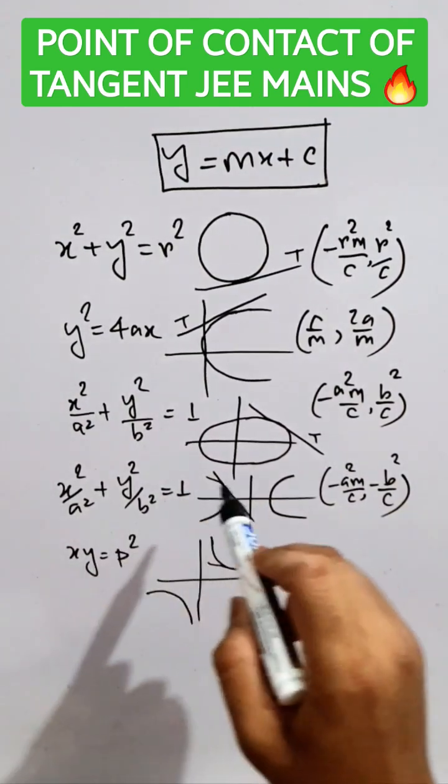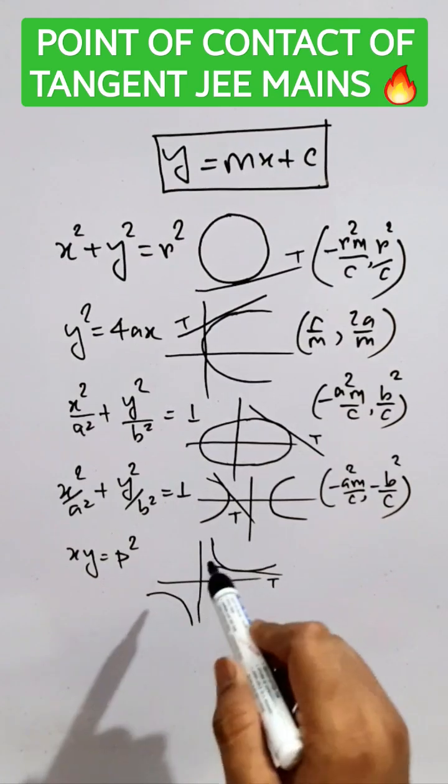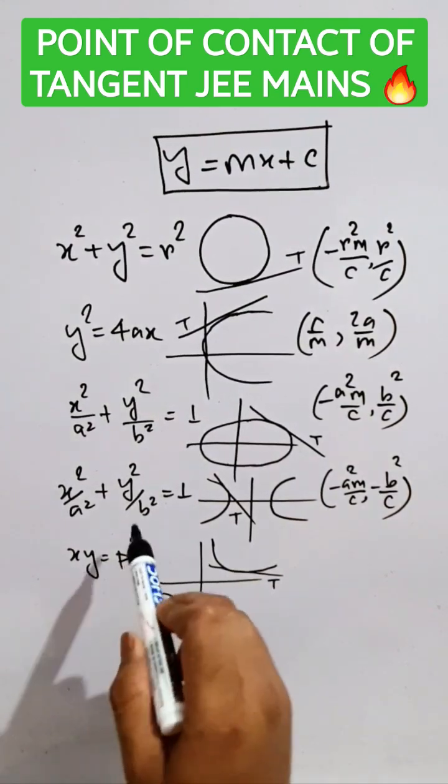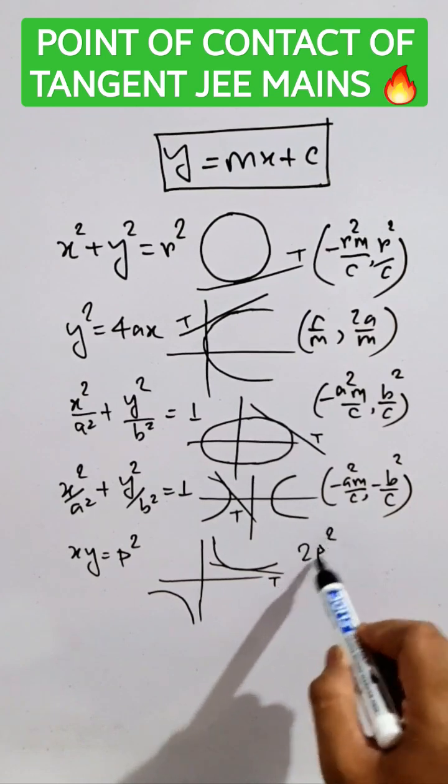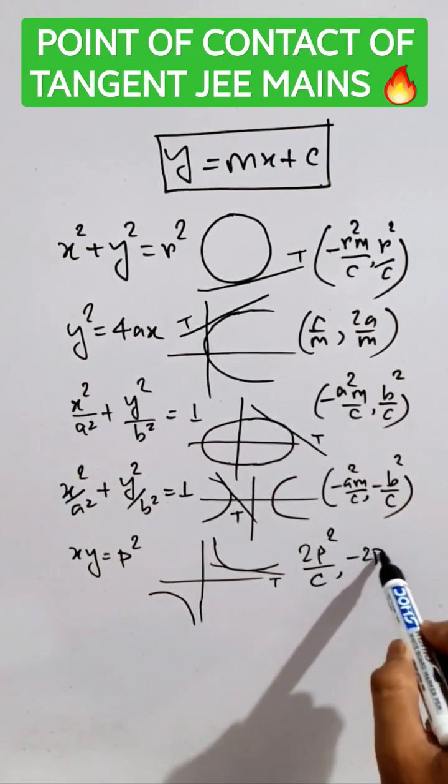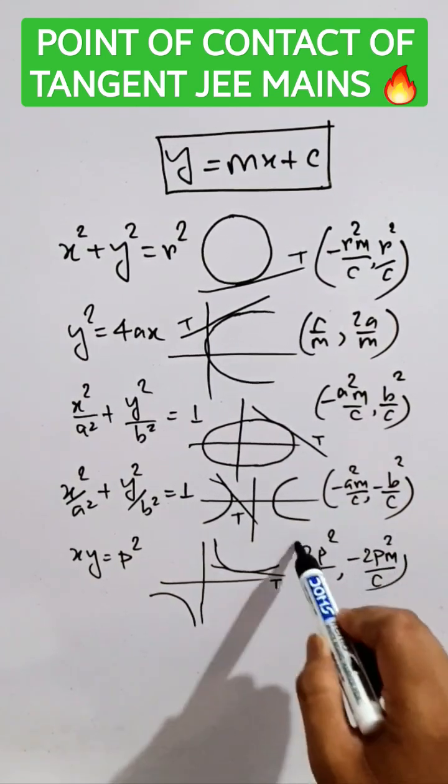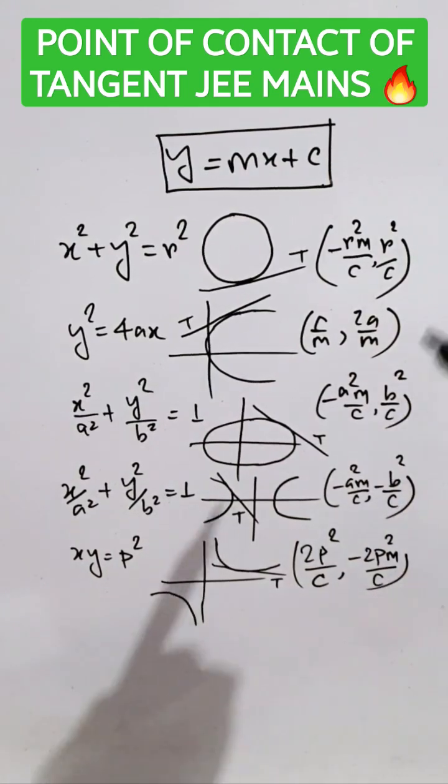Now, for this rectangular hyperbola, wherever it is P square, the form will be 2P square by C, comma, minus 2P square M by C. These are the points of contact.